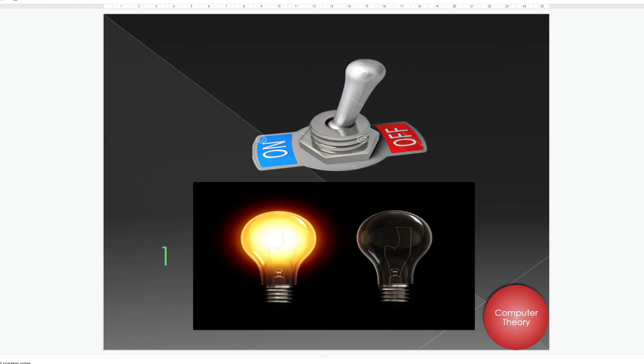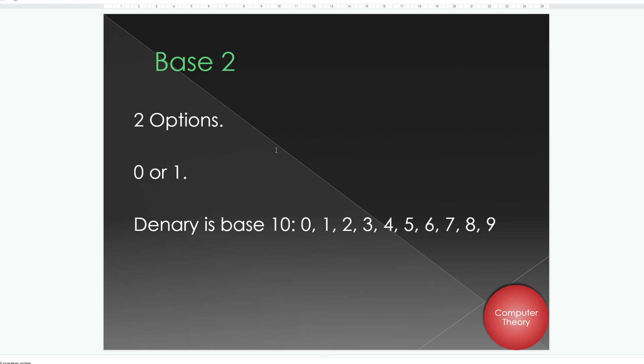But it allows us to process data, run programs, compute information with our systems, and it allows the computer to actually work through it effectively. Because at the end of the day, computers can't actually count past one, in essence, because what they use is what's called base two, which has two options: zero or one. They can't go past one.